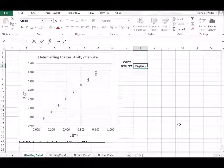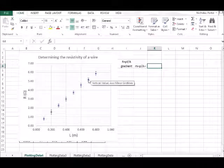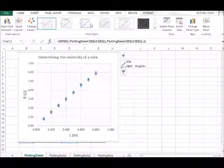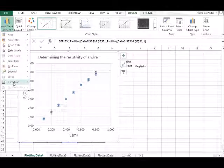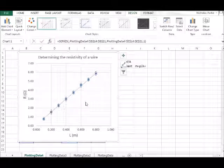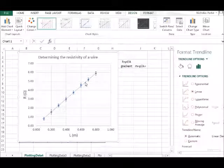Now to add a gradient from our curve what we have to do is select the data that we're interested in, add chart element, go to trendline and choose a linear trendline. Once it's there we can double click on the gradient.